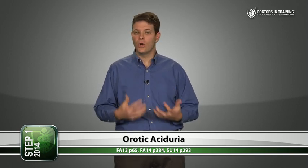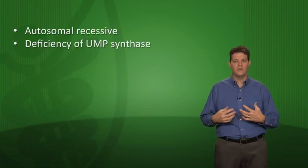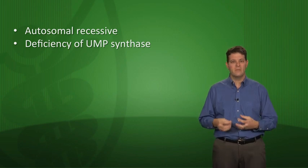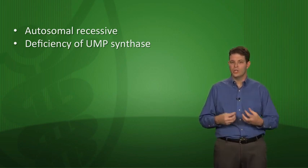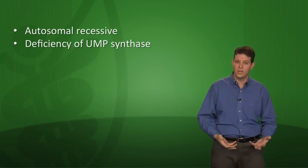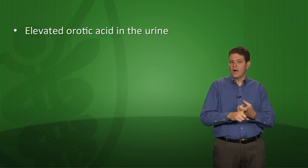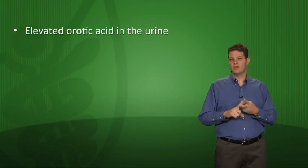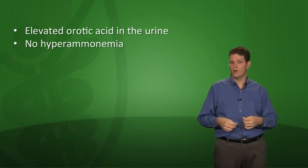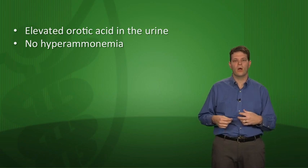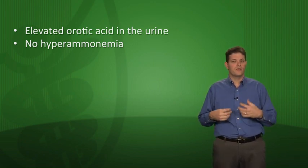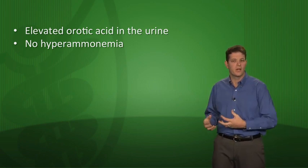Orotic aciduria is a condition where there's a defect in the pyrimidine synthesis pathway causing too much orotic acid in the urine. It's an autosomal recessive disorder caused by a deficiency of UMP synthase. When that enzyme doesn't work, orotic acid can't be converted to UMP, so it builds up and spills into the urine. Key findings: elevated orotic acid in urine and no hyperammonemia.